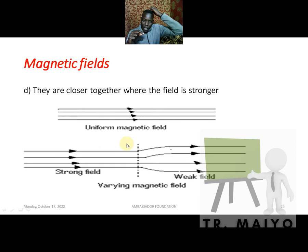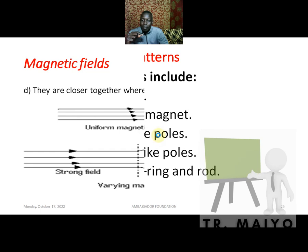Magnetic field lines are closer together where the magnetic field is stronger, and wider apart where the magnetic field is weaker. You can observe this with a uniform magnetic field diagram — when the lines are far apart the field is weak, and when they are close together the field at that point is very strong.